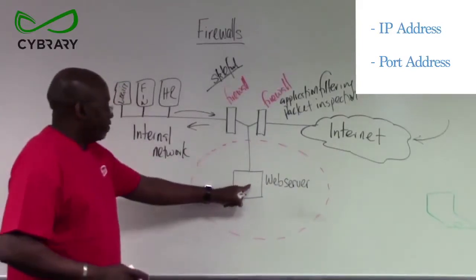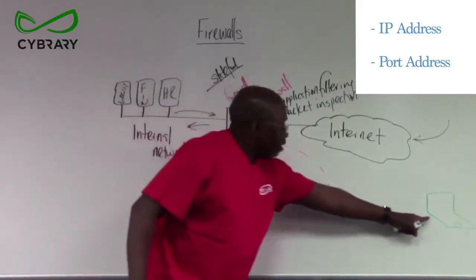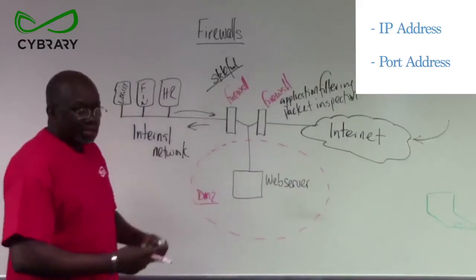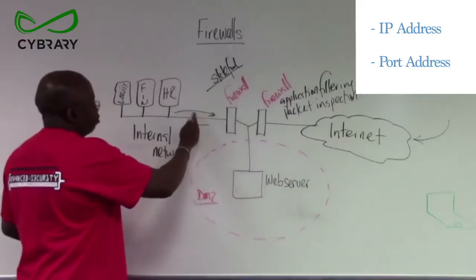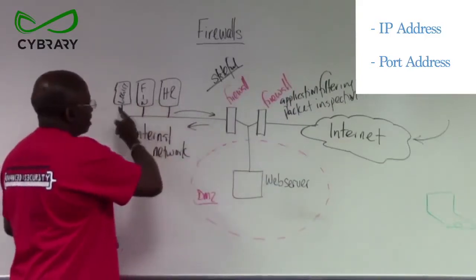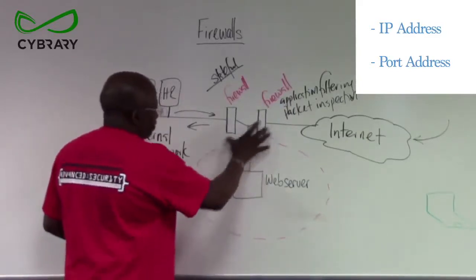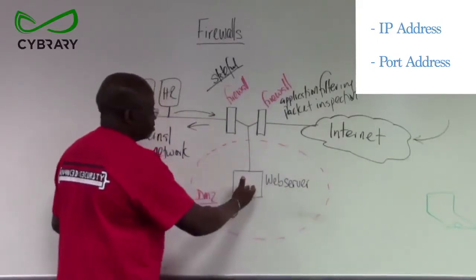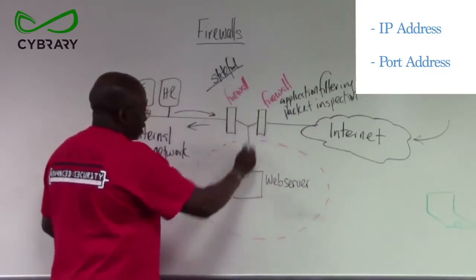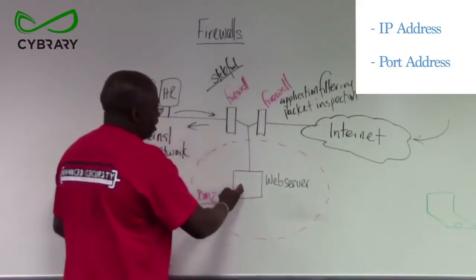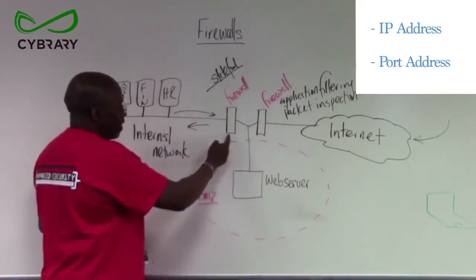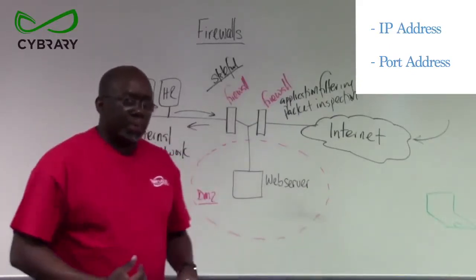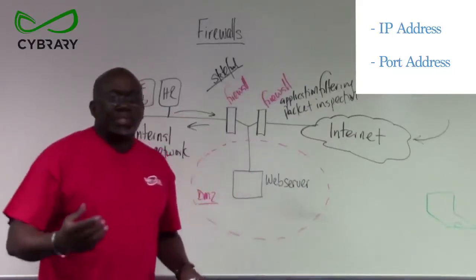The DMZ is a zone where you put public servers, like a web server. You need internet users to have access to your server, but it is bad practice to put that server on the internal network, as attackers could use it as a foothold to reach other systems and breach confidentiality. Hence, we put that server in between two firewalls. Access from the internet is allowed only to that server — using these firewalls, we control access only to the DMZ server. Some organizations put their web servers in the DMZ; others put their email servers there.